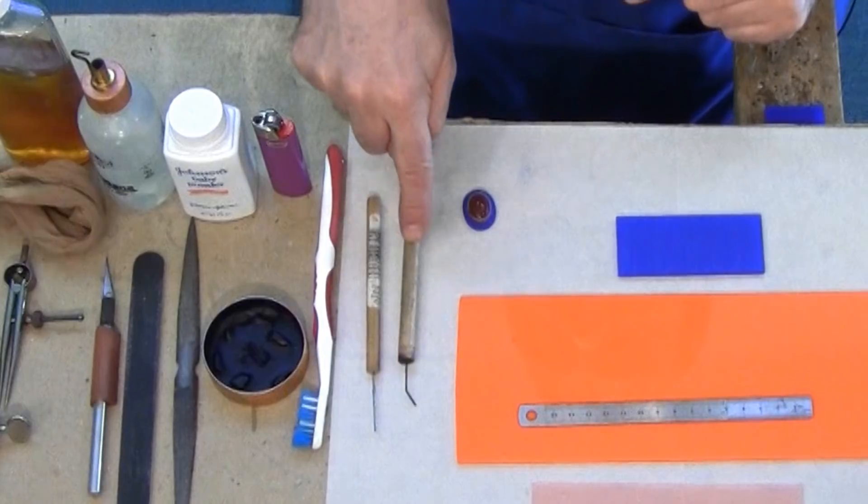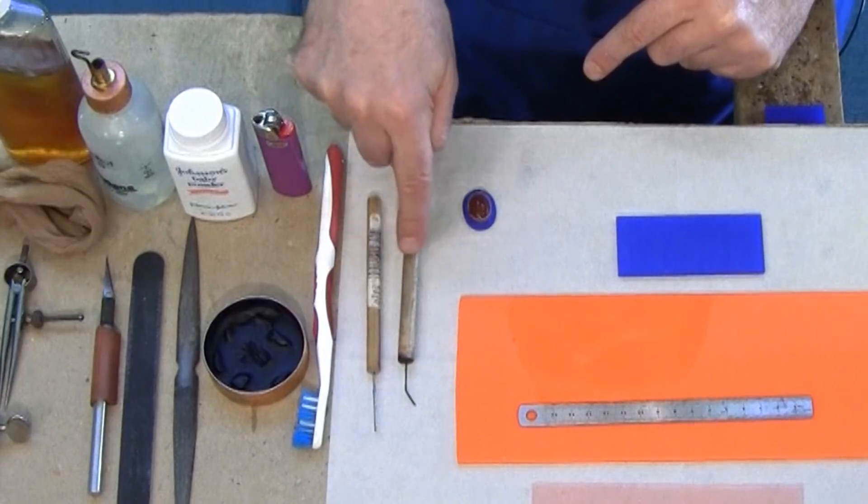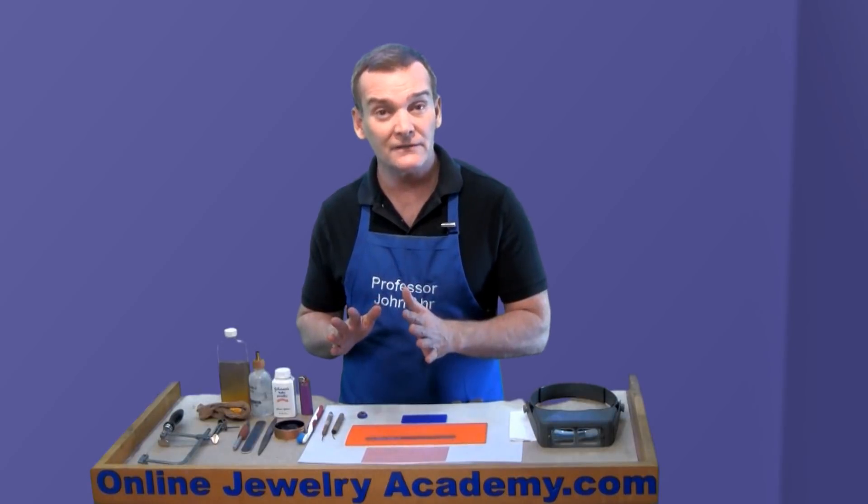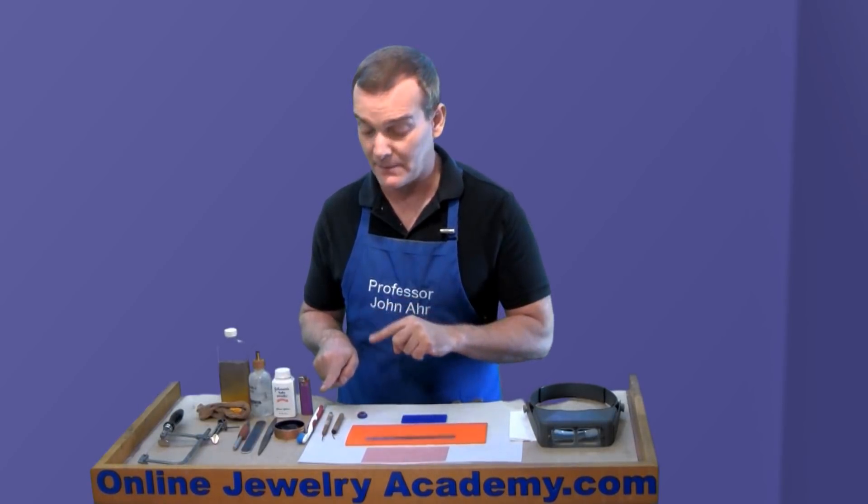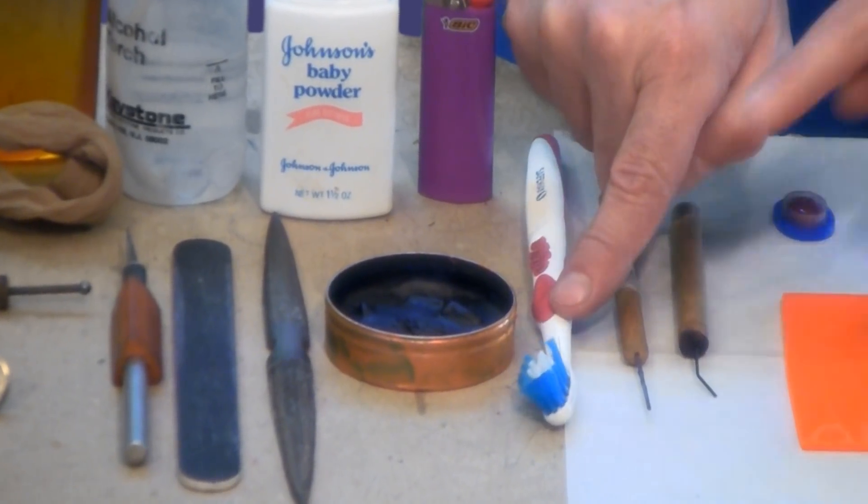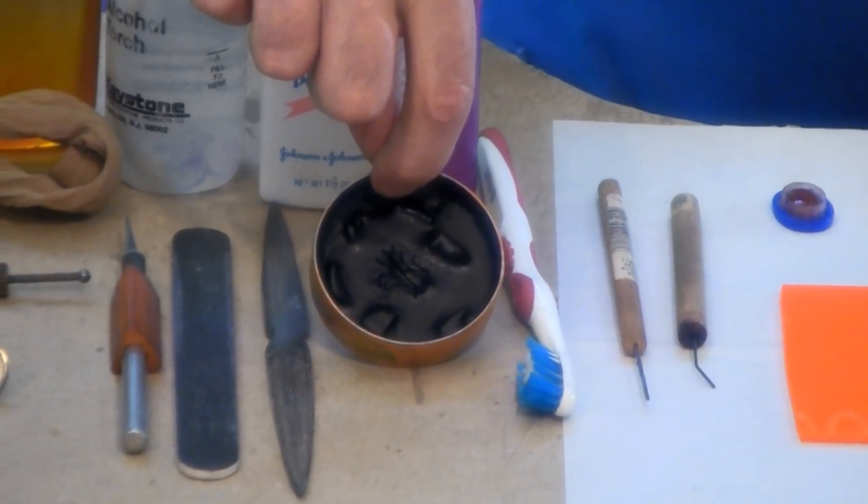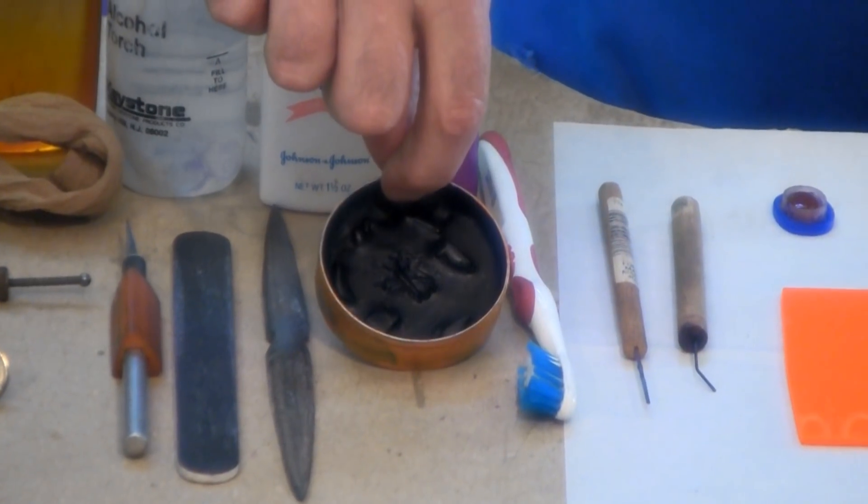Let me show you what you're going to need in order to make something like this. Starting right here, I've got a couple of waxing tools. One's got a bent end, and the other one's straight. They function differently, and I'll show you how in just a bit. I've got a very soft toothbrush, and this is a little wax pot. It's filled with blue inlay wax.